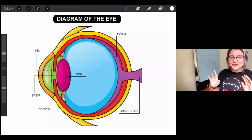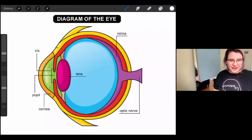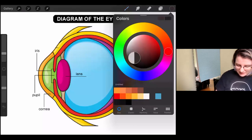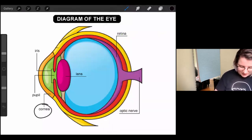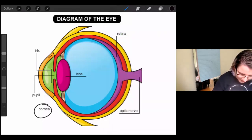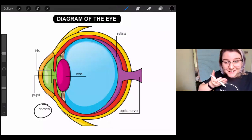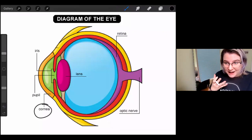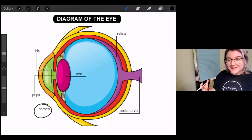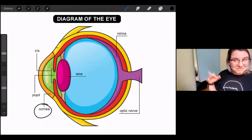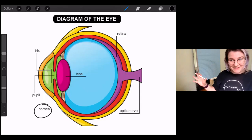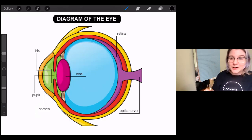So we are going to start with the cornea which you'll see is right here. It's this orange part right here that I'm highlighting in black. That is a clear lens on the outside of our eye that allows light to get into the eye. Does that make sense? I think it'll make more sense once we look at the rest of the words.